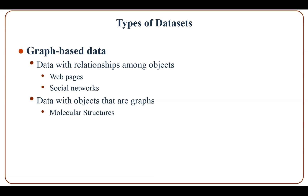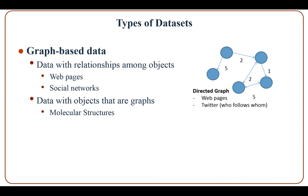The second type is graph-based data. We consider two cases: data with relationships among objects, and data with objects that are graphs. With data with relationships among objects, web pages — which contain both text and links to other pages — can be an example. The data objects are mapped to nodes and the relationships between objects are captured by the links between objects.